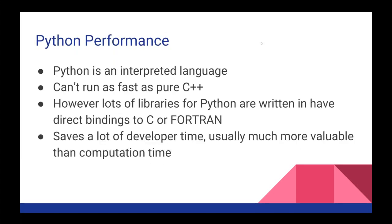Let's talk about Python performance, which is something some people try to use against Python. It can't run as fast as something like C++ since it's an interpreted language. However, there are a lot of libraries for Python that are written to have direct bindings to C or even Fortran, which are languages that run really, really fast. You can take advantage of these libraries — NumPy is one we'll show later — and harness Python's quick scripting ability while having it bind to C or Fortran to run operations almost as fast as if you had written in those original faster languages.